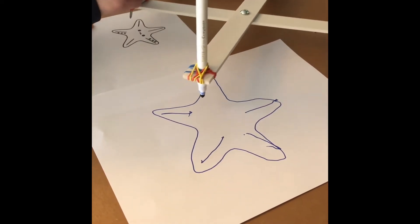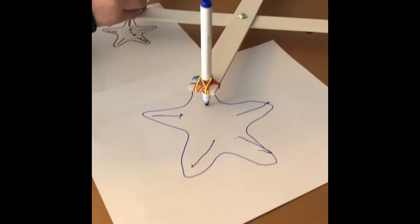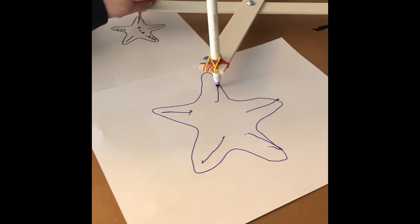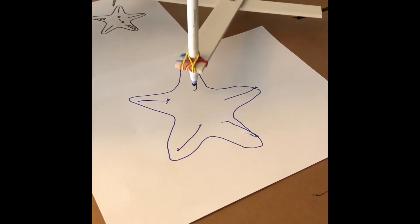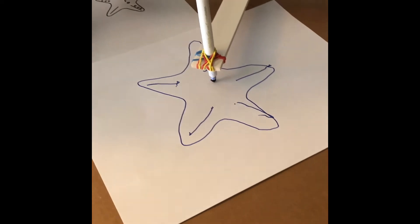All I have to do is draw over the starfish and it automatically starts copying the image, and as you can see, it's twice the size.